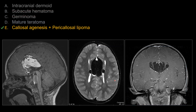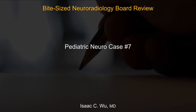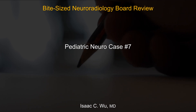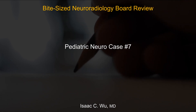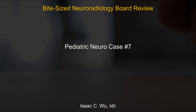This is an example of callosal agenesis plus pericallosal lipoma. That's all for this pediatric neuro case number seven. Thank you for your attention and good luck on your board exam.